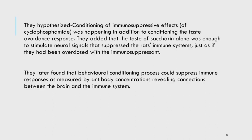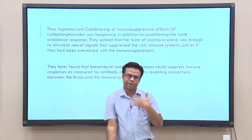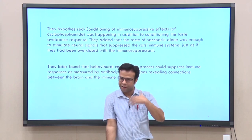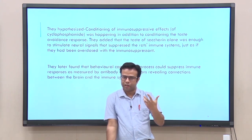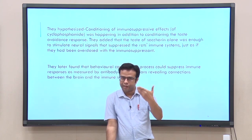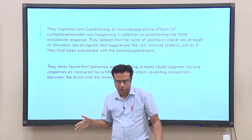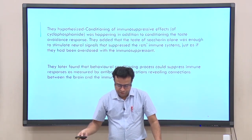They hypothesized that conditioning of the immunosuppressive effect was happening in addition to the conditioning of the taste avoidance response — a kind of double conditioning. The taste of saccharine alone was enough to stimulate neural signals that suppressed the rats' immune system, just as if they had been overdosed with an immunosuppressant drug. Later research confirmed, even in animals and humans, that behavioral conditioning can suppress immune response as measured by antibody concentrations, revealing connections between the brain and immune system, and that psychological factors — particularly negative emotions and stress — can signal the brain to suppress the immune system.